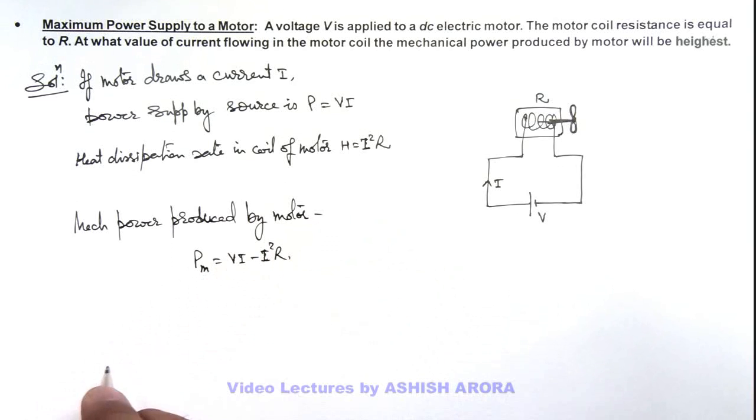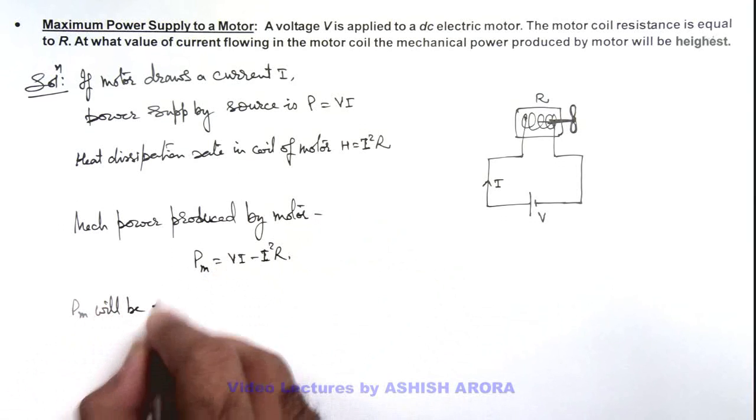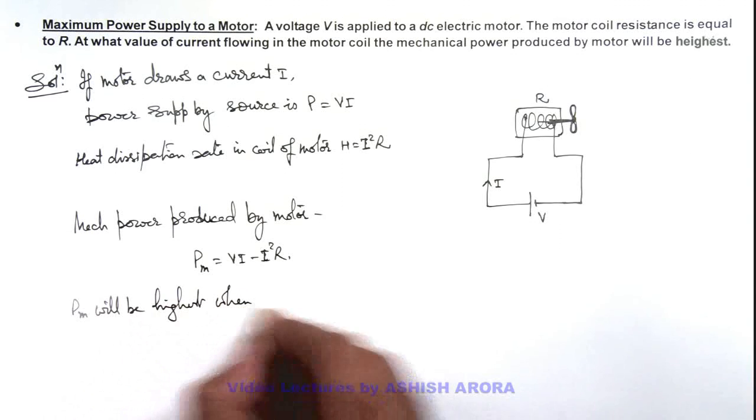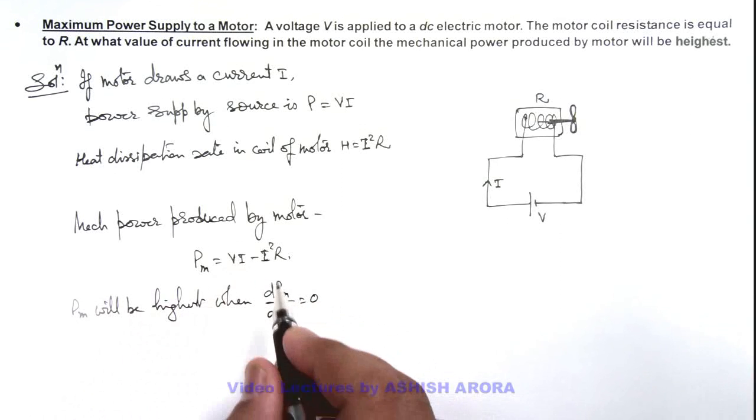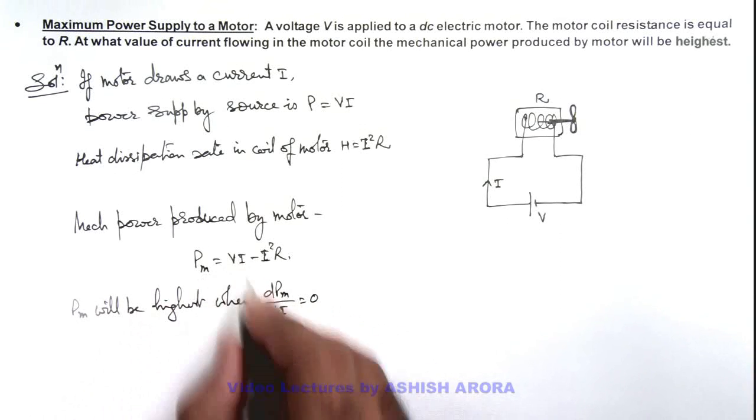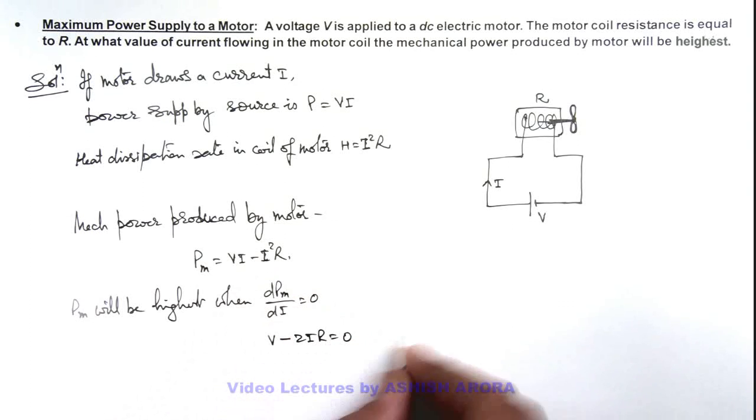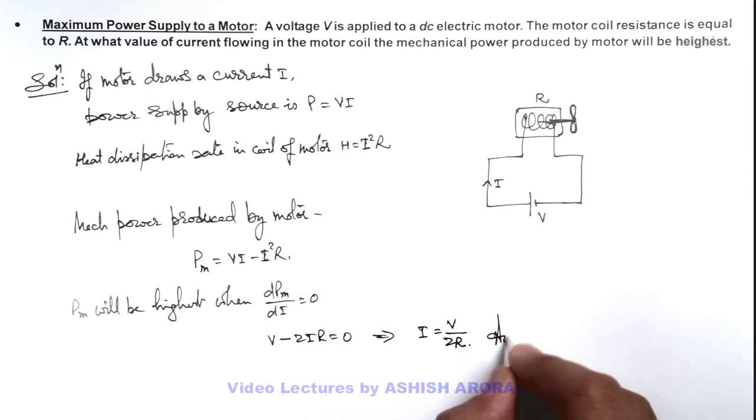So this P_m will be highest when dP_m/dI = 0. Here we are using maxima-minima to maximize this power. We differentiate: this gives us V - 2IR = 0, which gives us the value of current at which the mechanical power is highest: I = V/2R. That will be the result of this problem.